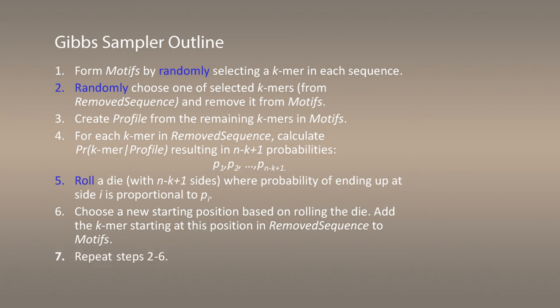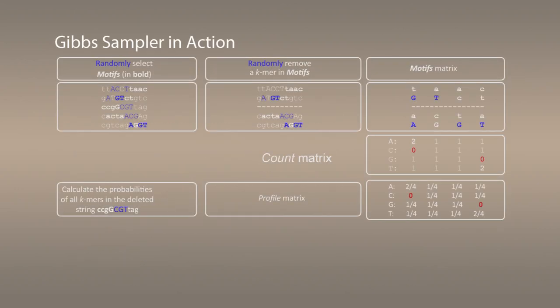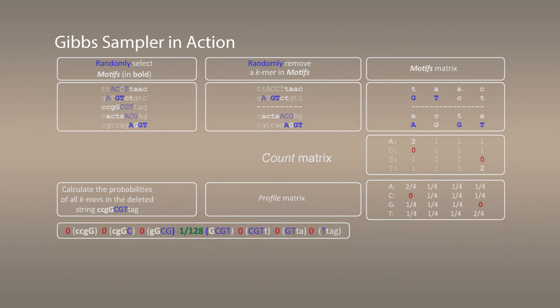Let's once again look at how the Gibbs sampler works. Assuming we've completed the first stages and are about to generate the probabilities of every k-mer in the sequence, using the same example as before, we generated our seven probabilities — but it turns out that six out of seven probabilities are actually zeros.